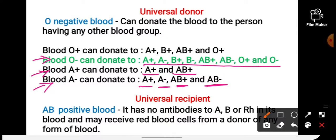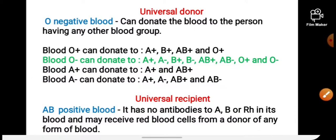Now we will see which blood group can receive blood from all blood groups — that is AB positive. A person with AB positive blood can receive all types of blood groups if they need blood. For this reason, that person or that blood group is called the universal recipient.